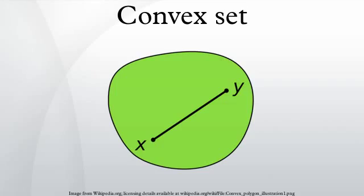In Euclidean space, an object is convex if for every pair of points within the object, every point on the straight line segment that joins the pair of points is also within the object.